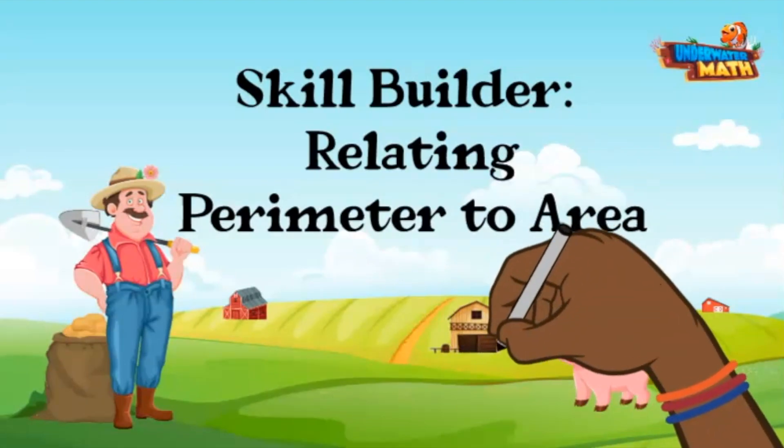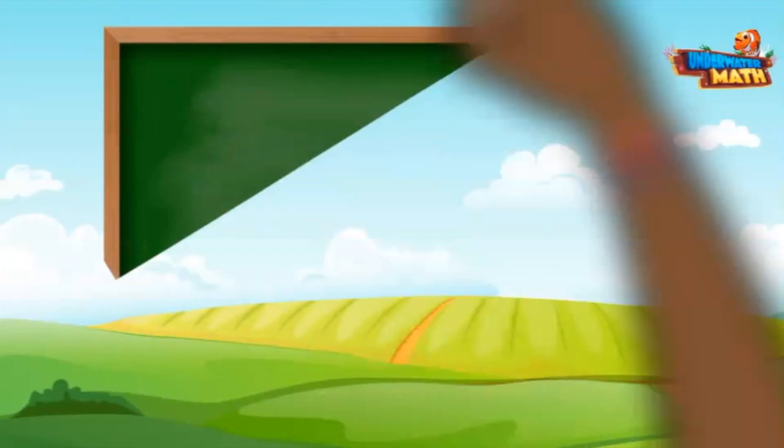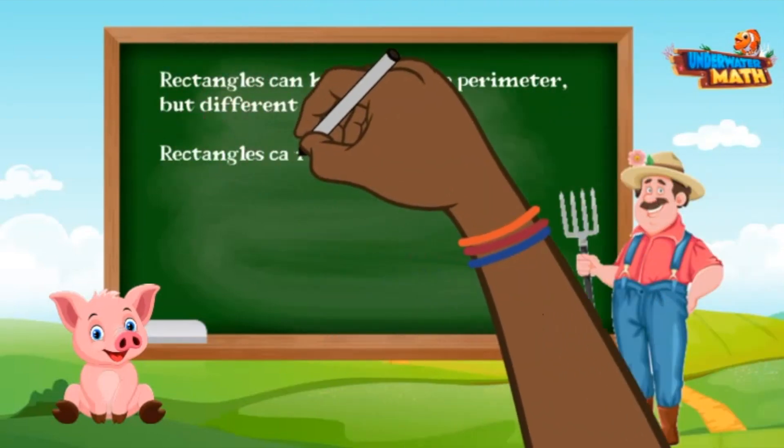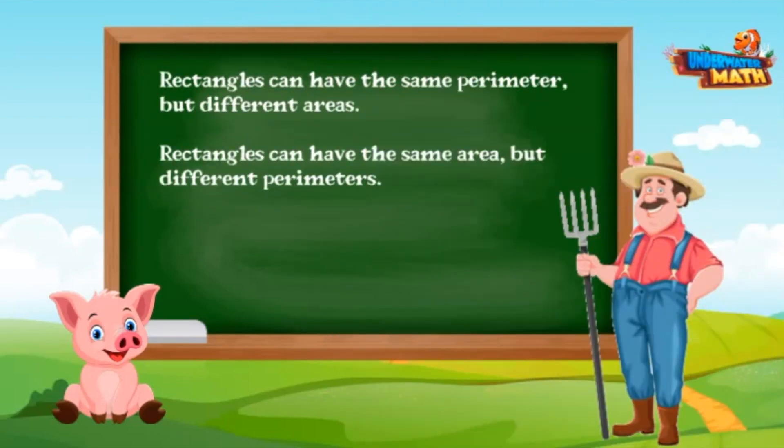As we've learned, rectangles can have the same perimeter but different areas as other rectangles, or the same area but different perimeters. That's right.